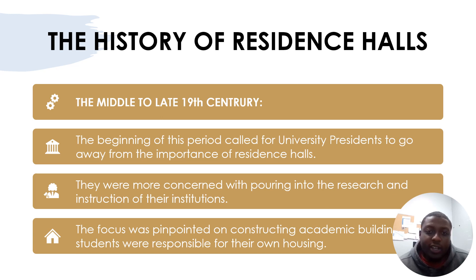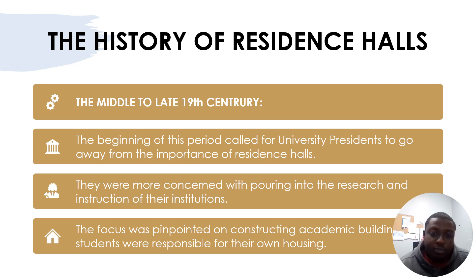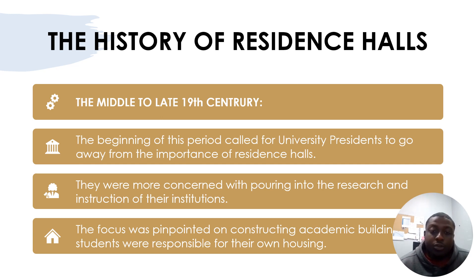Moving on to the late 19th century: the beginning of this period called for university presidents to move away from the importance of residence halls. This was pretty much during wartime, like the Civil War. University presidents were more concerned with pouring into the research and instruction of their institutions rather than worrying about residence halls. They were focused on constructing academic buildings and research facilities, so students were responsible for their own housing.